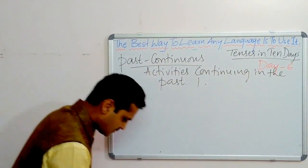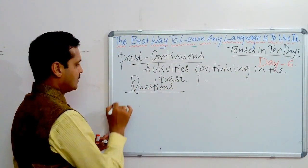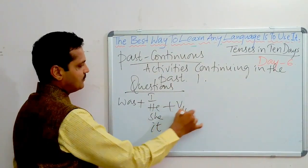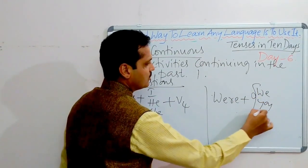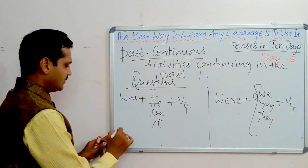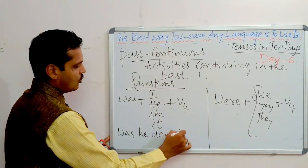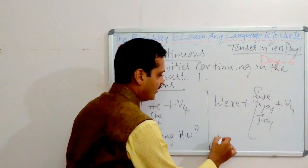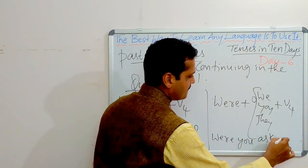For questions: 'Was' plus I, he, she, it plus V-ing. And 'Were' plus we, you, they plus V-ing. Example: 'Was he doing homework?' Another example: 'Were you asking me?' This is the question pattern.